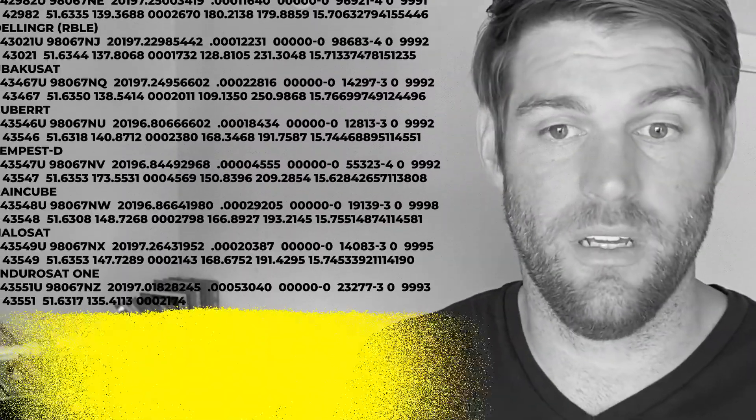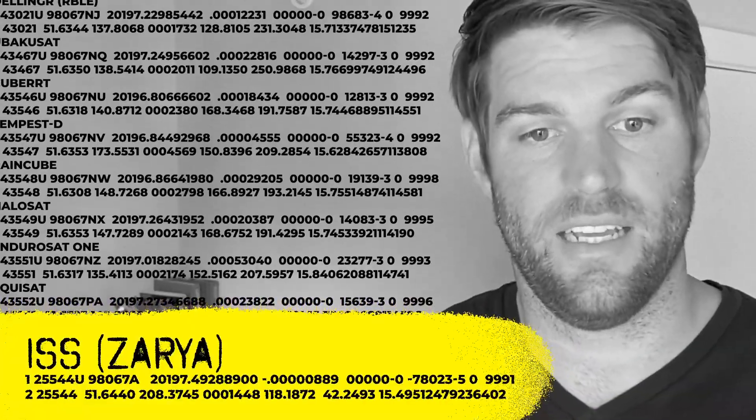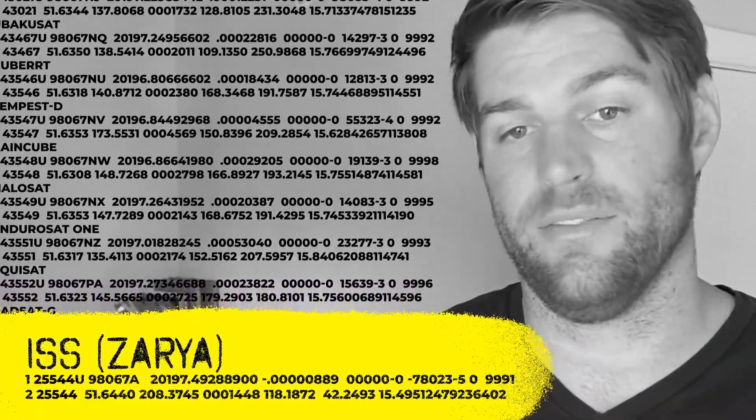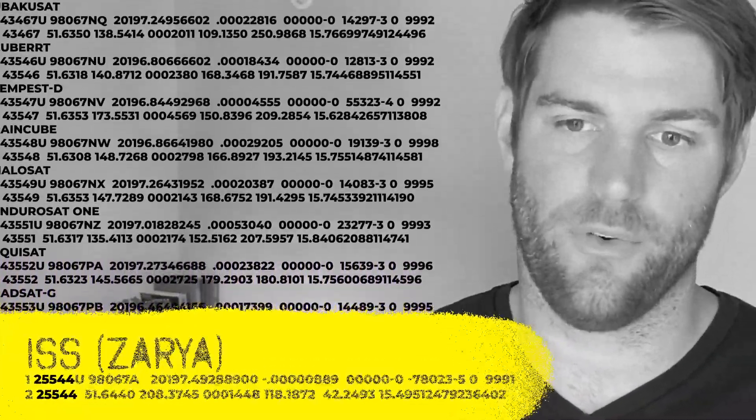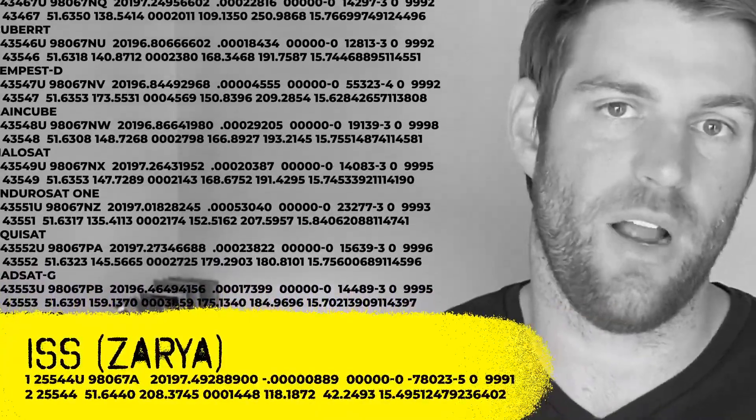Here's an example of one for the International Space Station. You can see the ISS's NORAD ID at the beginning of each line, 25544. The rest is used to describe the orbital motion.